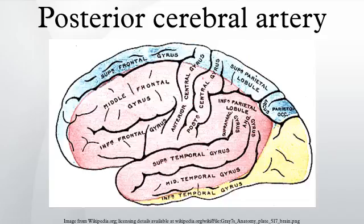The branches of the posterior cerebral artery are divided into two sets: ganglionic and cortical. The central branches, also known as the perforating branches — thalamoperforating and thalamogeniculate, or posteromedial ganglionic branches — are a group of small arteries which arise at the commencement of the posterior cerebral artery. These, with similar branches from the posterior communicating, pierce the posterior perforated substance and supply the medial surfaces of the thalami and the walls of the third ventricle.